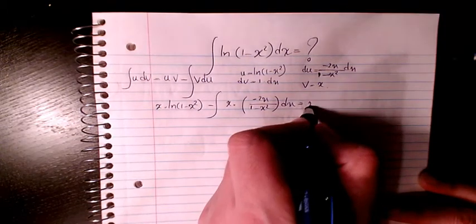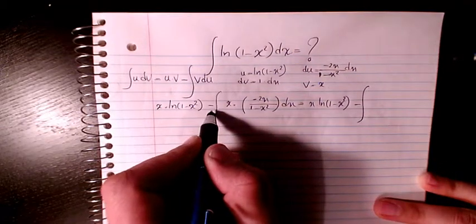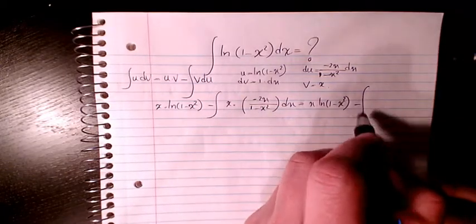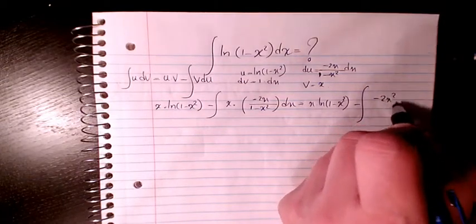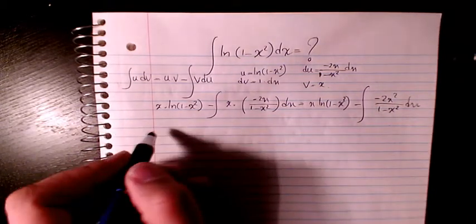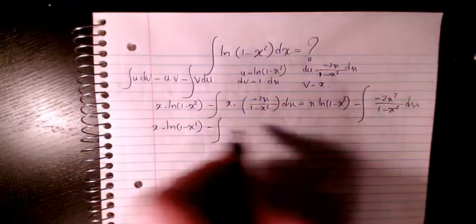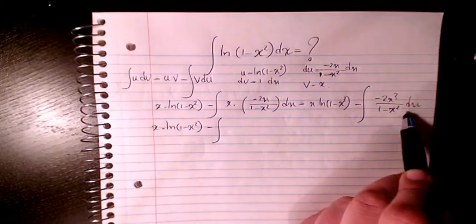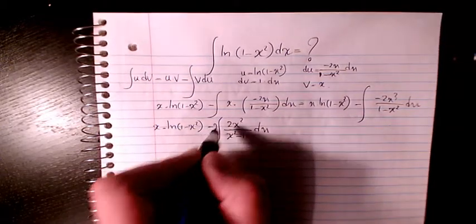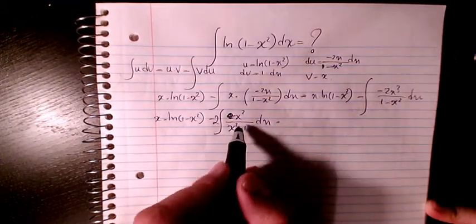So it's going to be x times ln(1 minus x squared) minus the integral of negative 2x squared over (1 minus x squared) dx, which becomes positive 2x squared divided by (x squared minus 1) dx. I can pull the 2 out in front of the integral, giving x squared divided by (x squared minus 1) dx.